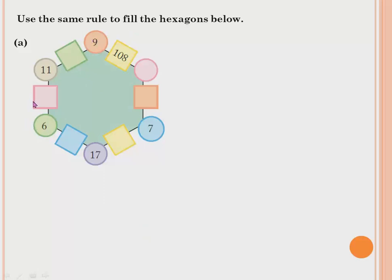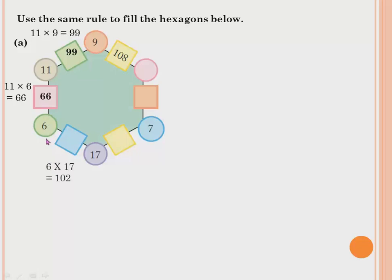A hexagon has 6 sides. Now let's apply the same rule. Here 11 and 9 are given, so 11 × 9 = 99. Next, 11 × 6 = 66. Then 6 × 17 = 102. And 17 × 7 = 119.